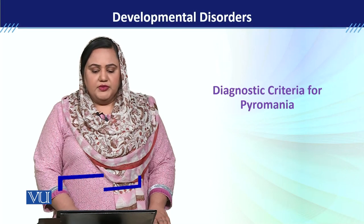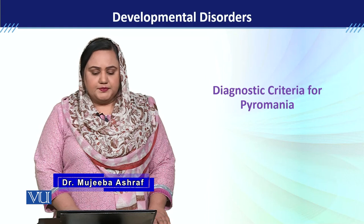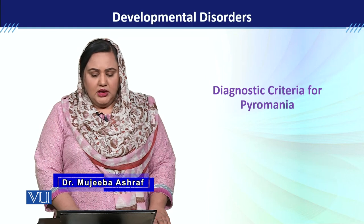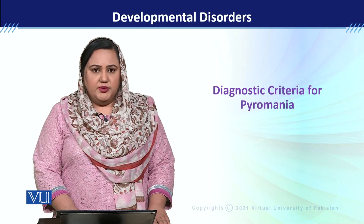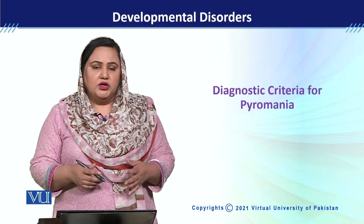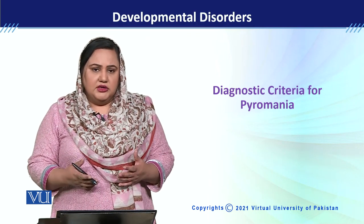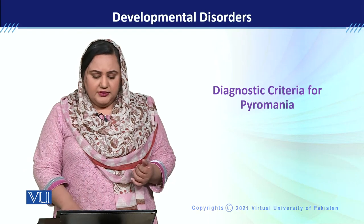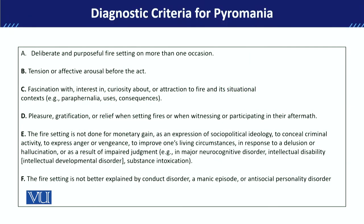Module 74: Diagnostic Criteria for Pyromania. When we talk about the Diagnostic Criteria for Pyromania, we are talking about the DSM-5 ka jo Diagnostic Criteria hai uske baare mein. DSM-5 ka jo Diagnostic Criteria hai for Pyromania, that consists of A to F Criteria.